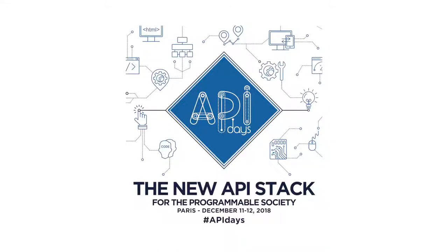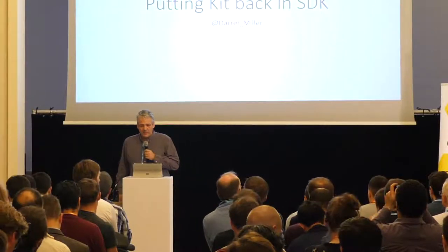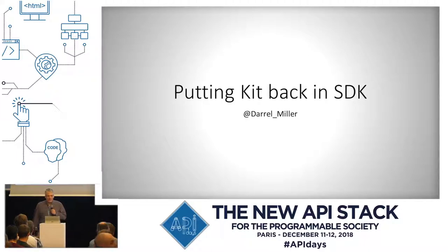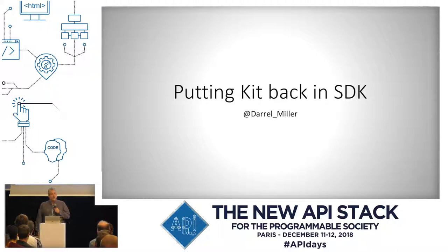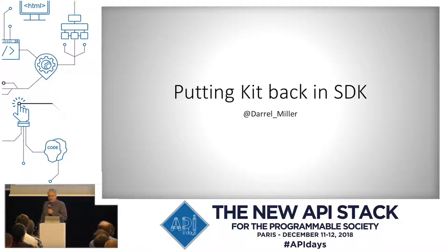My name is Darrell Miller. There's my Twitter handle on the slide. I spend quite a bit of time on Twitter, so if you ever want to reach out to me, I'm happy to chat with folks who are interested in APIs for all kinds of reasons. I work for Microsoft as a product manager on the Microsoft Graph API that exposes all the Microsoft 365 cloud services.